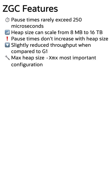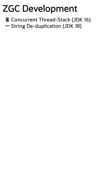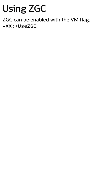The most important configuration with ZGC is heap size. It's important to leave enough headroom beyond the needs of your application's live set to allow allocations to be serviced while the GC is running. ZGC has continued to see active development, with concurrent thread stack scanning, string deduplication, and more having been added. To enable ZGC, use the VM flag -XX:+UseZGC.